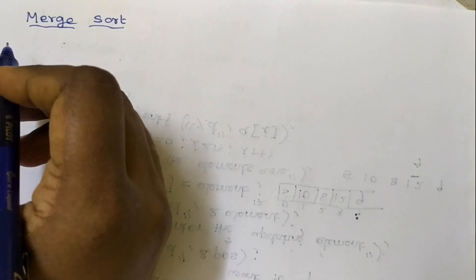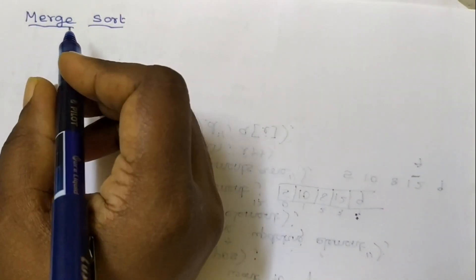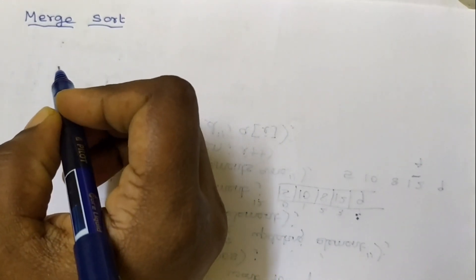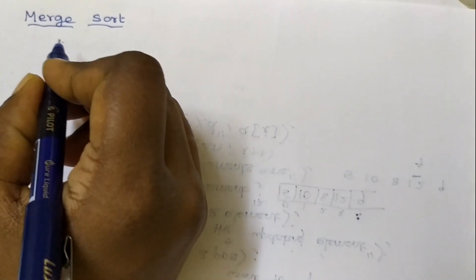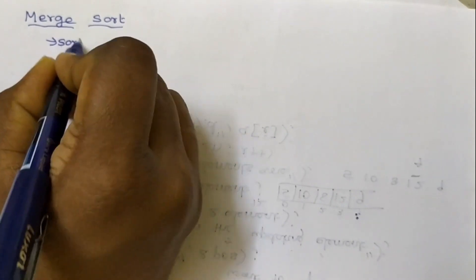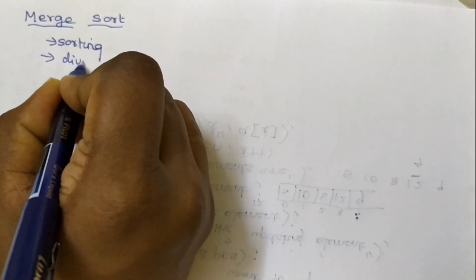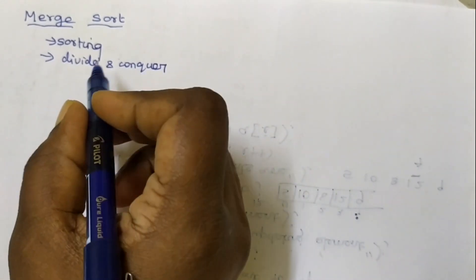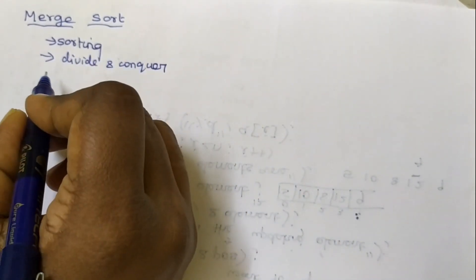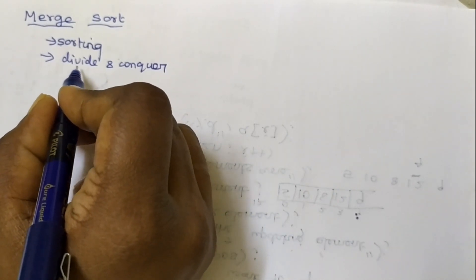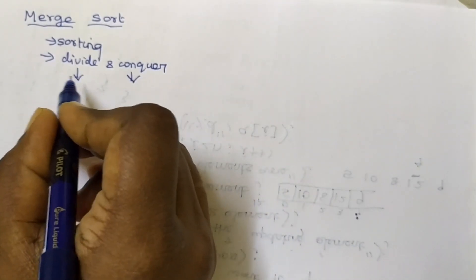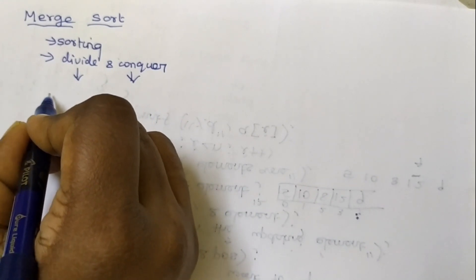In this tutorial we are going to learn about merge sort. The merge sort concept uses the divide and conquer technique. This sorting algorithm has two phases: the divide phase and the conquer phase.